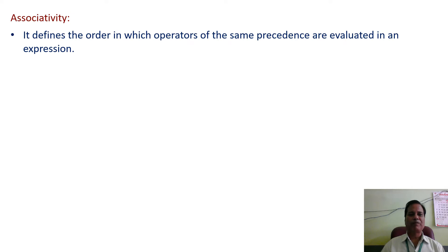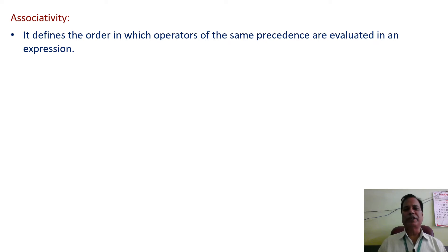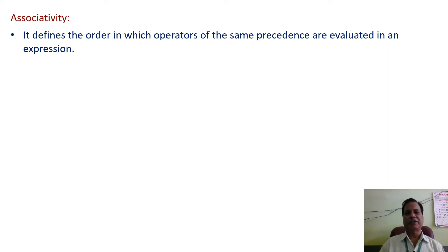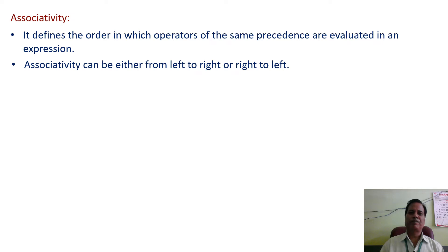Associativity defines the order in which operators of the same precedence are evaluated in an expression. It is possible that multiple operators of the same precedence appear in an expression. Associativity resolves this by evaluating either from left to right or right to left.